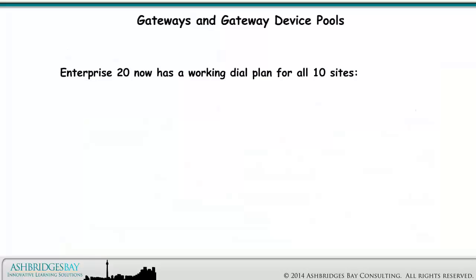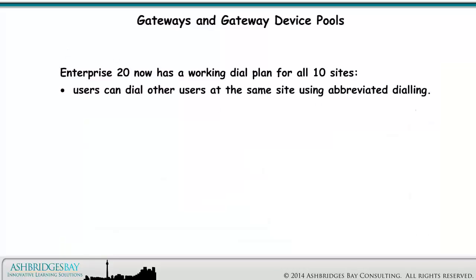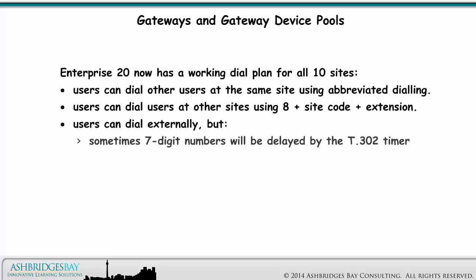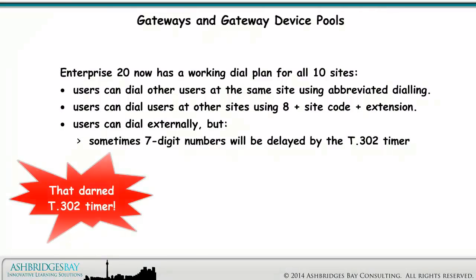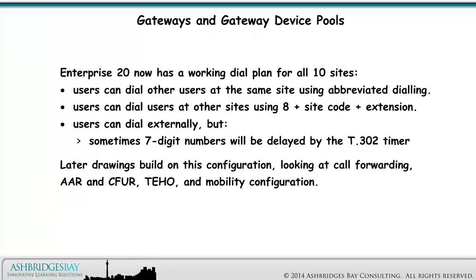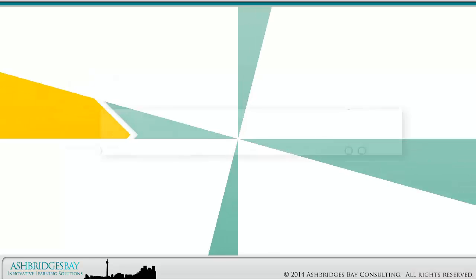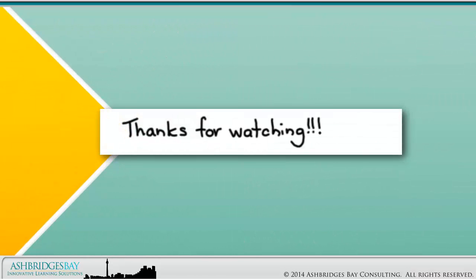Enterprise 20 now has a working dial plan for all 10 sites. Users can dial other users at the same site using abbreviated dialing. Users can dial other users at other sites using 8 plus site code plus extension. Users can dial externally, but sometimes 7-digit numbers will be delayed by the T.302 timer. Later drawings build on this configuration looking at call forwarding, AAR and CFIR, THO, and mobility configuration. Coming up next: Enterprise 20 dial plan build — blocking online's class of service for delayed 7-digit dialing. Thanks for watching!